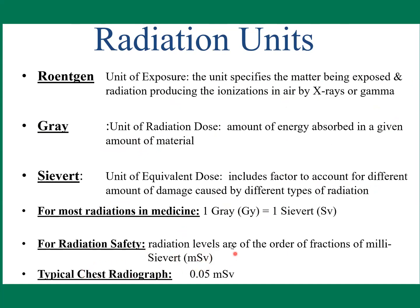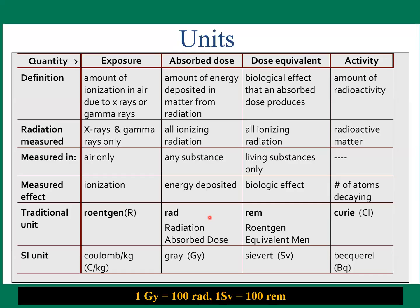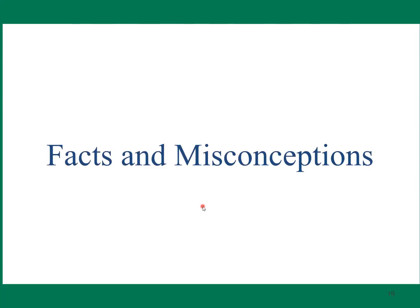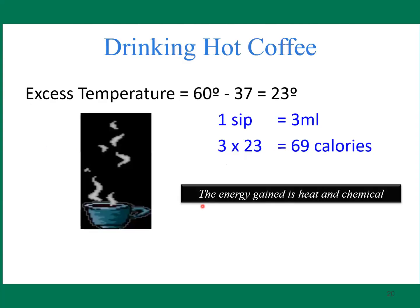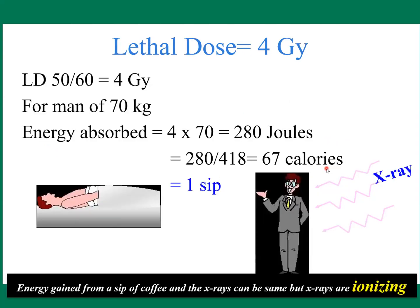Typically, a chest radiograph delivers about 0.05 mSv. These are more details of the same units, and the old names of the units are also mentioned here. To put it in context: drinking a hot coffee equals 69 calories, whereas a relative absorbed dose in Gray corresponds to the same amount of calories.